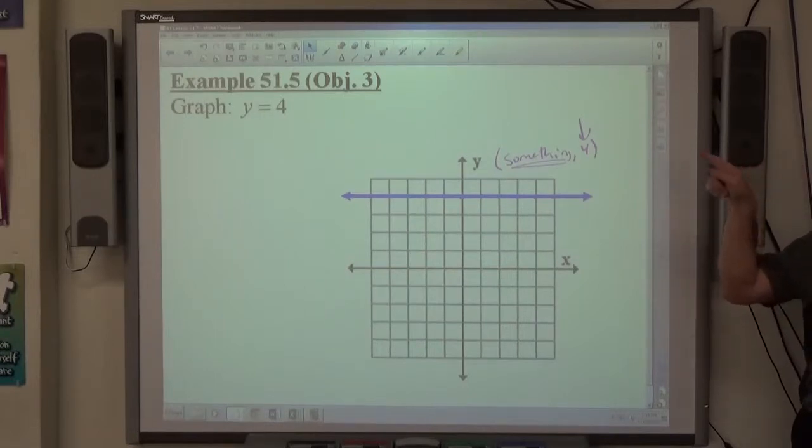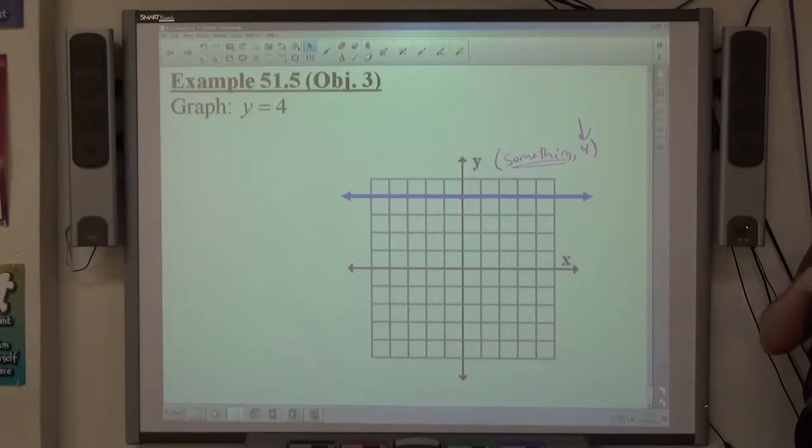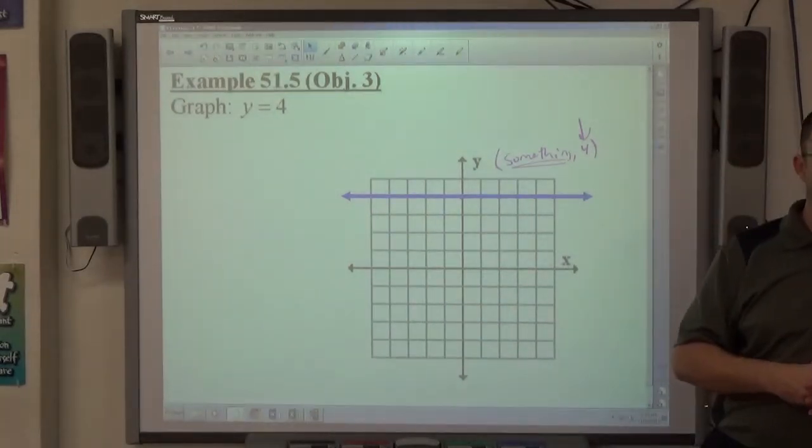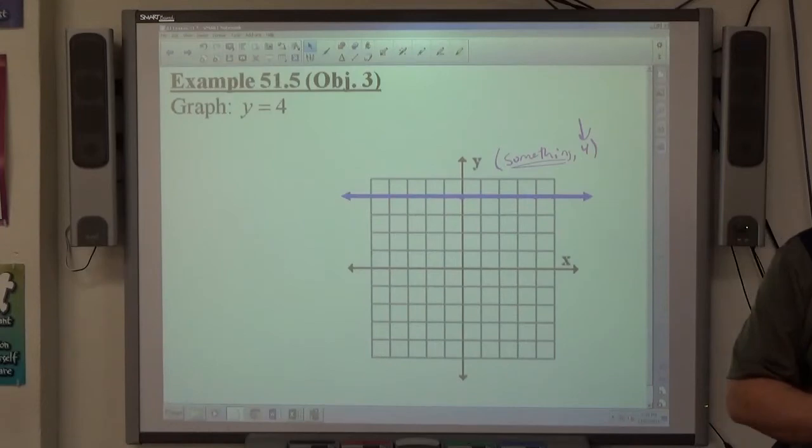If you see graph and there's an equation, they want a line. X and y both together create slanted lines. X equals creates a vertical line. Y equals creates a horizontal line. And all three of these is about recognition. If you see graph, look at the equation you have to graph to establish what it's going to look like before you graph it.